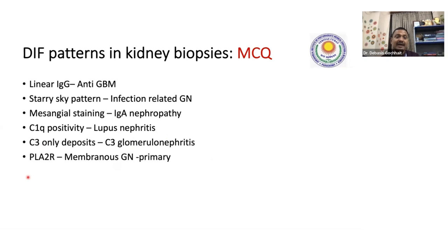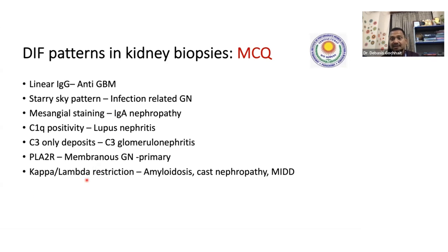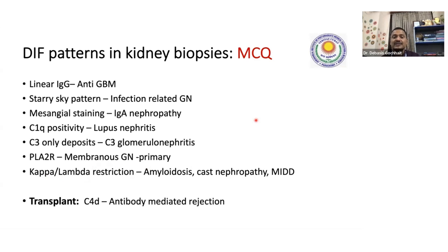PLA2R is positive in membranous glomerulopathy and helps differentiate primary versus secondary — it is mostly positive in primary membranous and rarely in secondary. Kappa-lambda restriction is important: if restricted, think amyloidosis or cast nephropathy. In transplant, we do C4D and look for positivity in the peritubular capillaries — PTC — to indicate antibody-mediated rejection. These are the key DIF patterns in kidney biopsies for your MCQs.